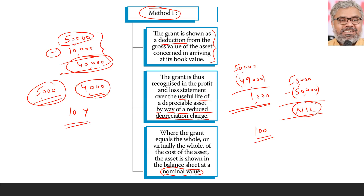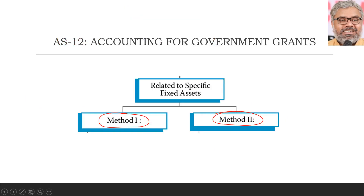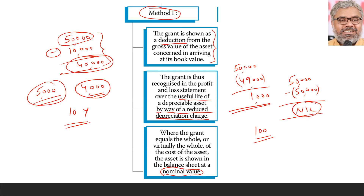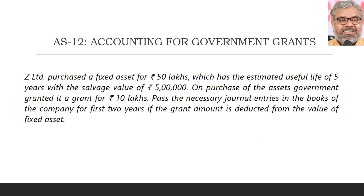In general, the important aspect for exam questions is grants related to specific fixed assets and how to treat them. If the question specifies which method to use, we use that. If not, we can use any of the methods. Method 1 is to reduce the government grant from the cost of the fixed assets, which reduces the depreciation charge over the life of the asset and increases profits over all those years. Let us look at an example with journal entries.